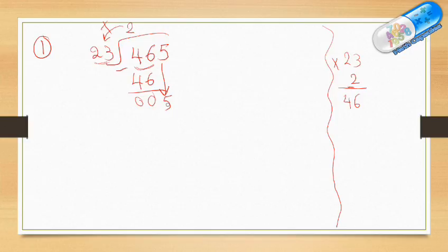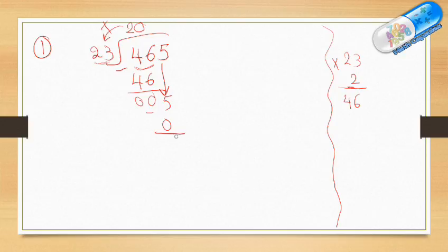Any number I bring down, I should divide it by the divisor. If it is less than the divisor, I put 0 here. So 5 divided by 23 — 5 is less than 23, so put 0. Then 0 times 23 is 0, and 5 minus 0 is 5. We can continue, or we can stop here and say the remainder is 5.